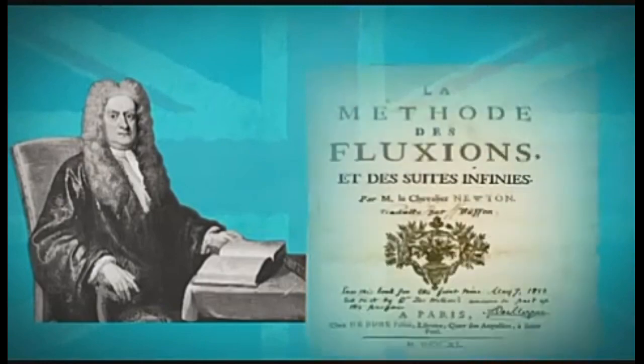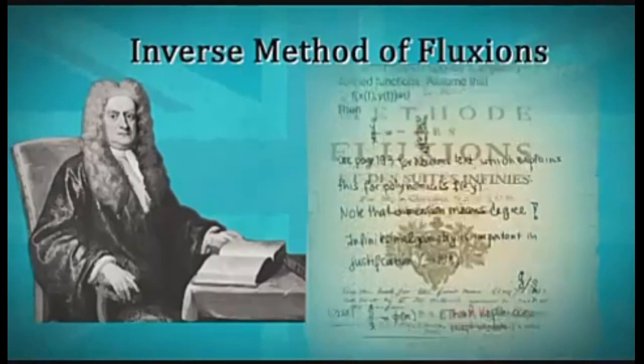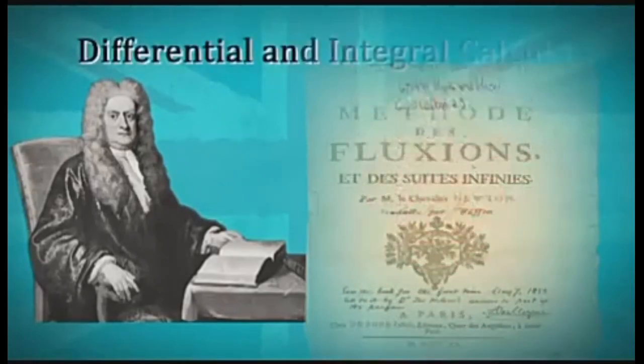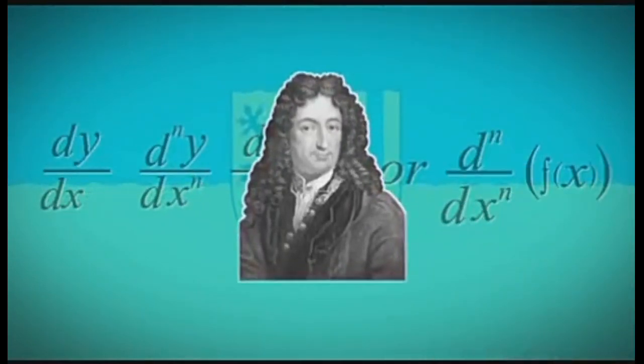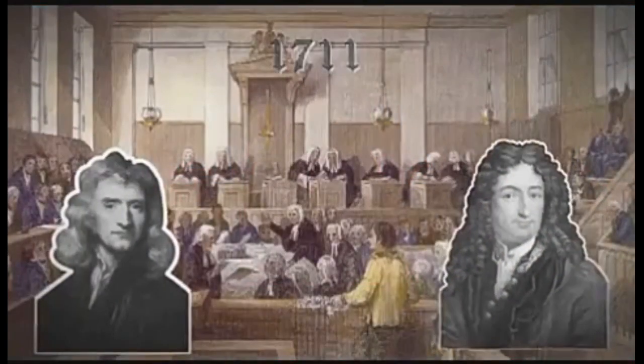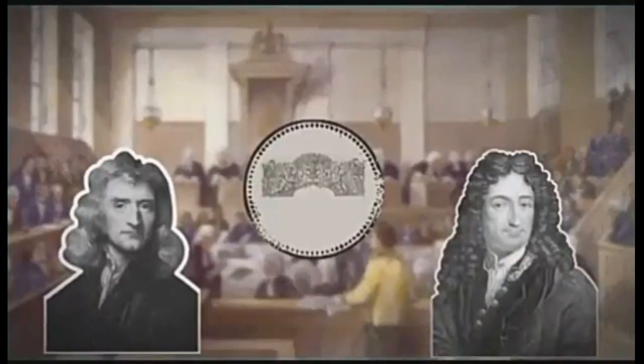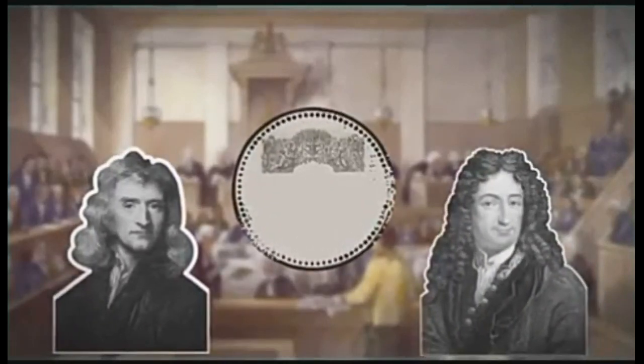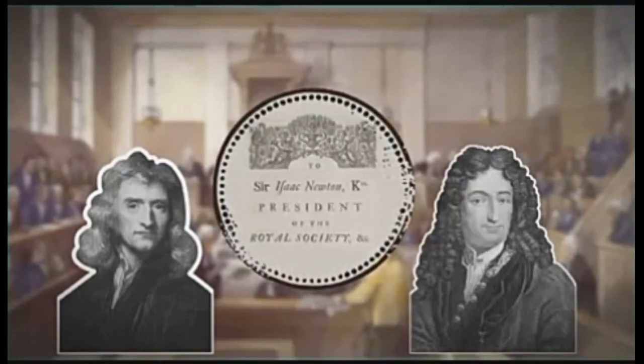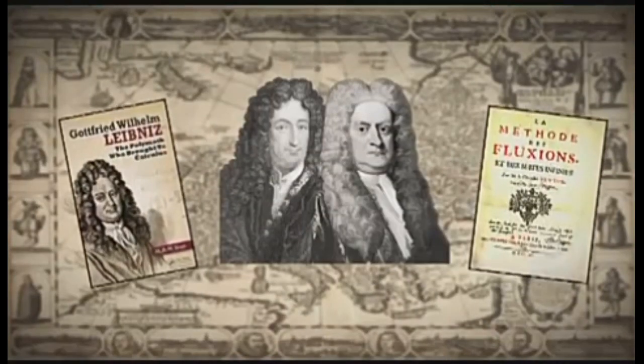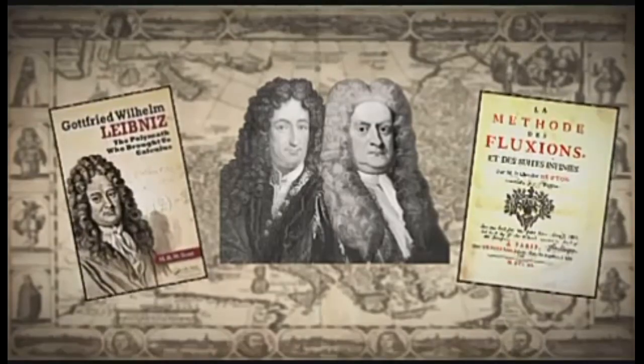Now what Newton developed was called his method of fluxions and inverse method of fluxions, which eventually came to be known as differential and integral calculus. What made Leibniz's work distinctive was the notation he introduced, which is what we use even today. In 1711, the controversy was taken to court. A commission was appointed by the Royal Society to look into the charges. Since Newton was the president of the society, it is not at all surprising that Leibniz was found guilty of plagiarism. Eventually, the mathematical community came to realize that Newton and Leibniz had made their discoveries independently, but not until years after Leibniz's death.